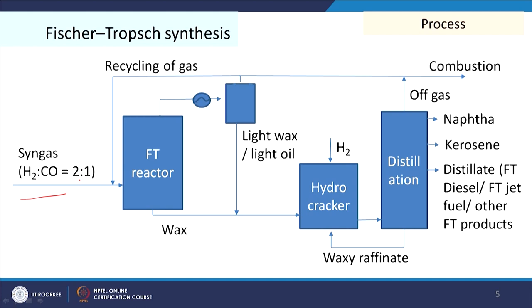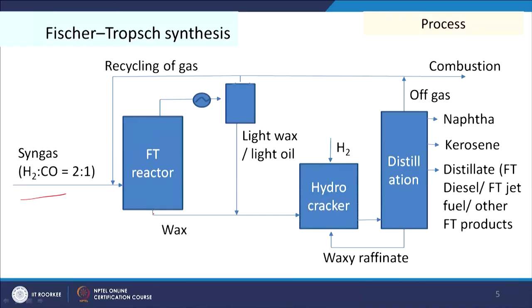Looking at the flow sheet: we have syngas with a H2 to CO ratio of 2:1 coming into the FT reactor. The FT reactor gives us olefins and paraffin-type compounds; higher-carbon paraffins mean wax. We get wax and also light oil and light wax. The vapor phase goes out as gas, which is recycled, and the condensed part comes out as light oil and light wax, with heavy wax from the bottom of the reactor.